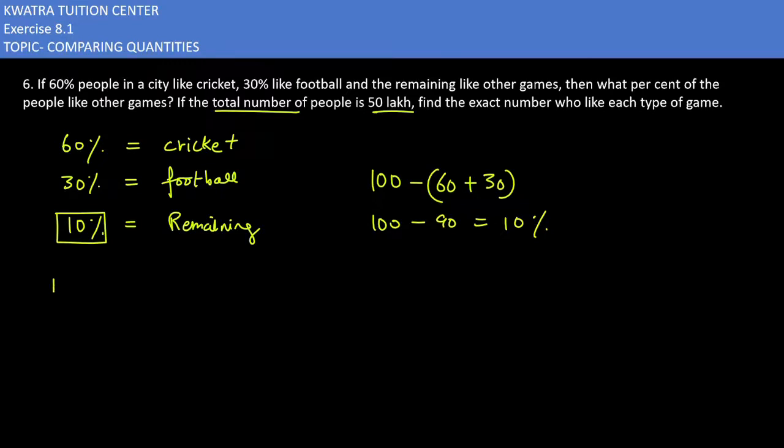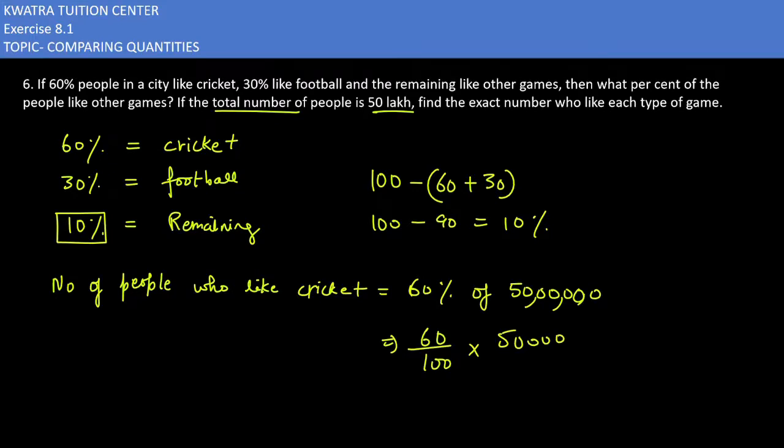What number of people who like cricket? Cricket is how much percentage? 60%. 60% of 50 lakh. Then we have to find the value of it. How much percentage is 60%? 60 over 100 into 50 lakhs. I can cancel two zeros with zeroes. How much is 50,000 into 60? How much is your answer? 30 lakh.